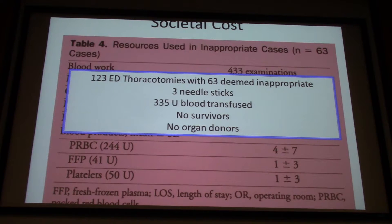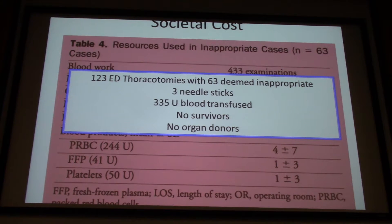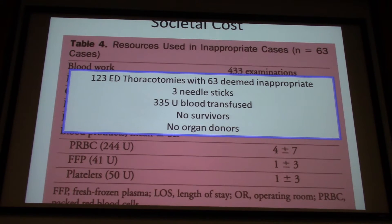With thoracotomy, you're not going to be pumping blood into these patients anyway, so it's not entirely fair to say the inappropriate case wasted blood. But the real question is whether that person's chest should have been cracked to begin with. Those 63 inappropriate thoracotomies represent a lot of resources used for patients who didn't need the procedure — if you'd called them dead without escalating, you wouldn't have given them blood at all.